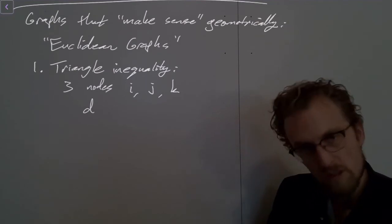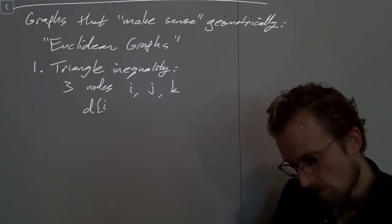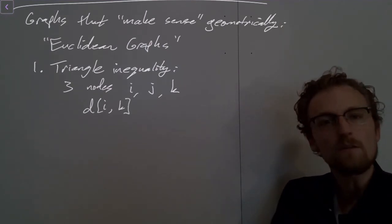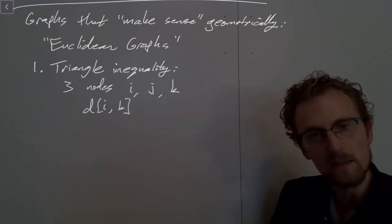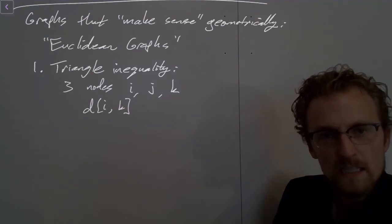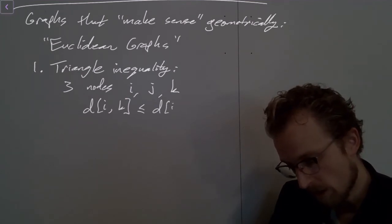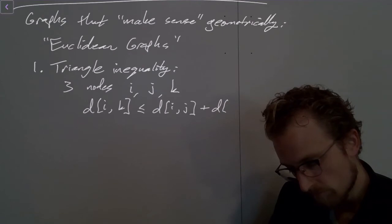that can't be slower, or that can't be a longer distance, than if I stop at j on the way. This has to be less than the distance, less than or equal to the distance from i to j, plus the distance from j to k.